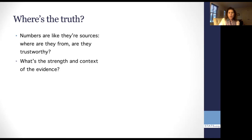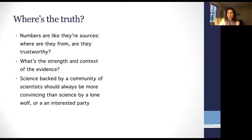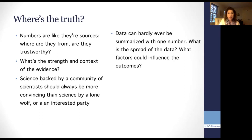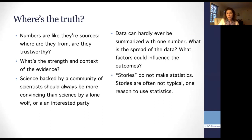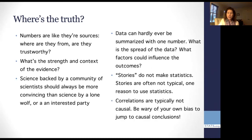So we get to all of this, we ask, what do we get from our full story here? We should get that numbers are like sources. We have to know where they're from and whether they're trustworthy. We need to know about strength and context of evidence. We need to trust our scientists and that a community of scientists should always be more convincing than science by a single scientist or an interested party, or for that matter, a politician. Data can hardly ever be summarized by a single number. We need to know about the spread of the data. We need to know about whether there are any confounding factors or other factors that can influence the outcomes. You can't rely on a story to make statistics. That's the n equals one. They're often not typical. And correlations are not causal in general. You need to be wary of your own biases.